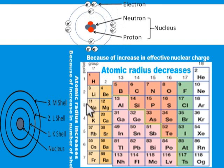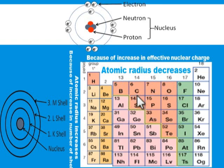As you move from left to right in the periodic table, the atomic radius decreases. Why? This is because the effective nuclear charge increases. Effective nuclear charge moves in the opposite direction to atomic radius — that is to say, as the effective nuclear charge increases, the atomic radius decreases.